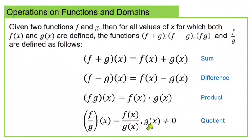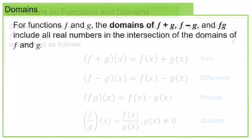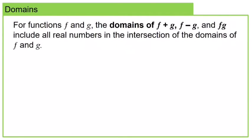Any number that causes the denominator to equal zero has to be left out of the domain. The domains of f+g, f-g, and f×g include all real numbers that are in the intersection of the domains for f and g. In other words, any number that's in the domain of both individual functions can be in the domain of the sum, difference, or product of those two functions.